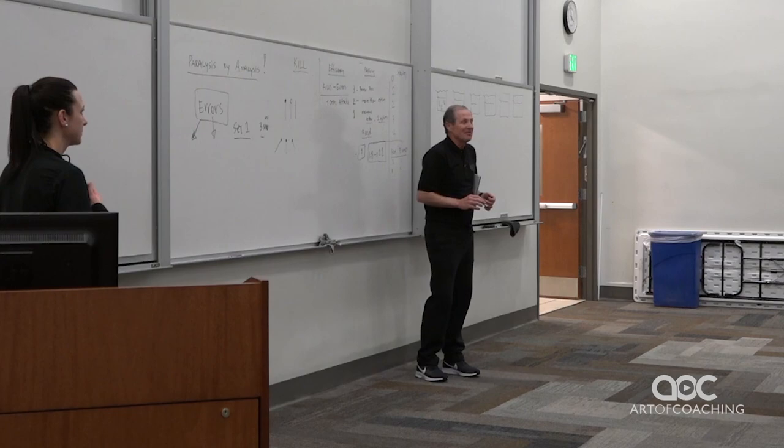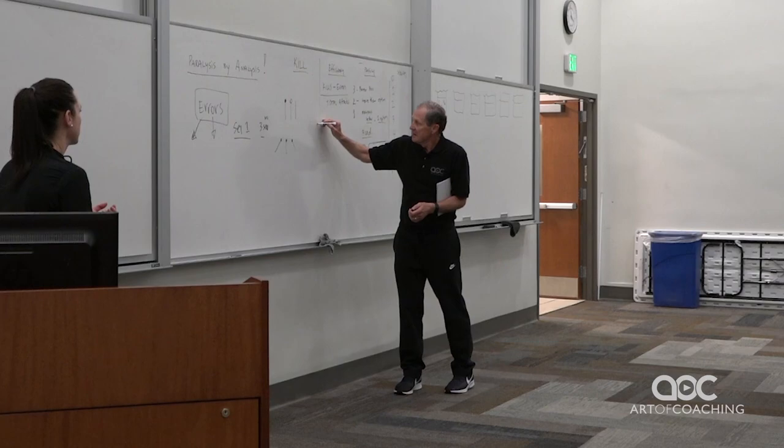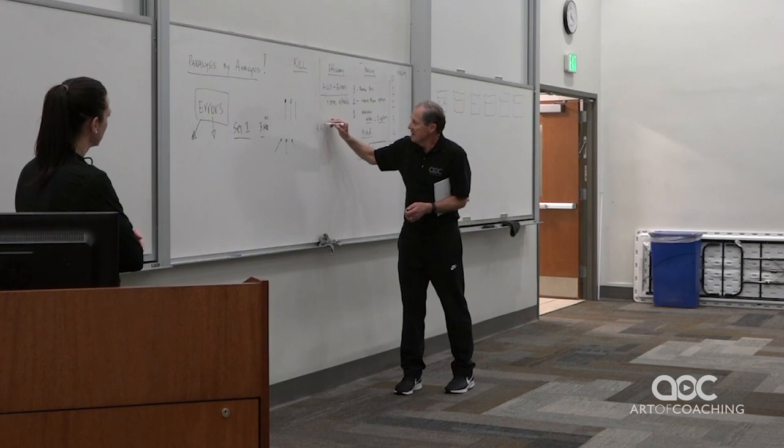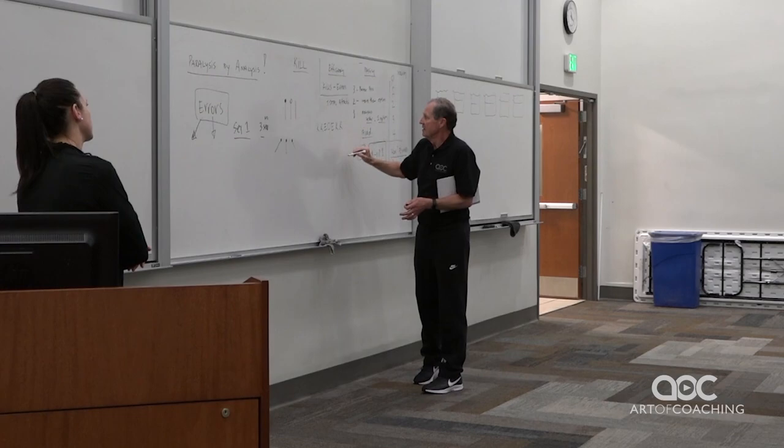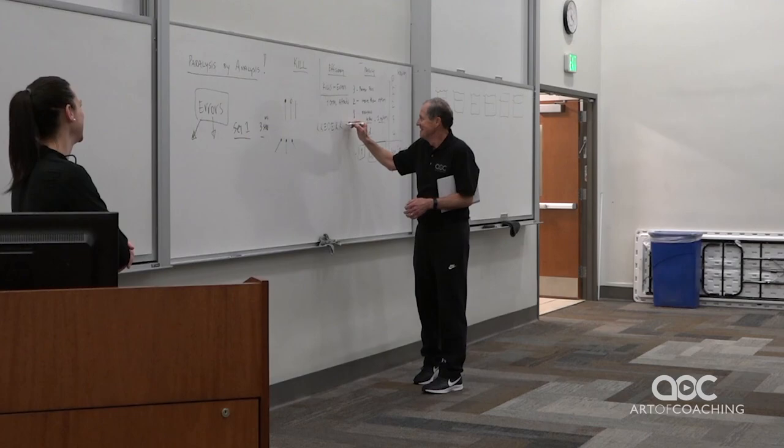So let's say as an example: Terry was just hitting and he had a kill, a kill, an error, a ball in play — so a zero I'll call it — he had another error, he had a kill, he had a kill. I'm going to make it 10 attacks so it's easy to add. Error, kill, kill.